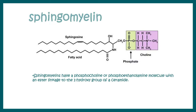Then there is sphingomyelin, where the R group is phosphatidylcholine. This is also considered a phospholipid, but the difference is it doesn't have the glycerol moiety as the alcohol part. It is generally found in axons and the myelin sheath, and is especially enriched in the nervous system.